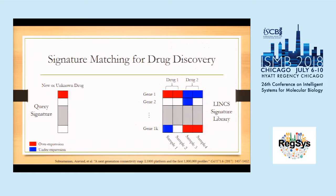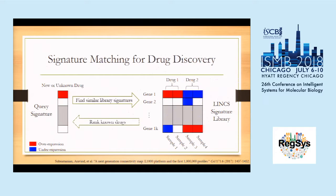The traditional approach for this task contains two steps. First, people find similar signatures from the library — asking what signatures are similar to your query. In this toy example, sample two in the library is the most similar one, sample one is kind of similar, while the other two samples are kind of the reverse of the query signature. The second step is to rank the drugs in the library with the signature similarity computed before. Because the two signatures for drug one are more similar to your query, people will prefer drug one over drug two.